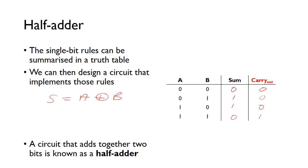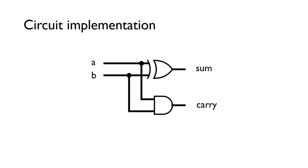For the carry, looking at the carry column, we can recognize that as an AND function — the carry is only one when both A and B are one. So carry-out equals A AND B. This circuit that adds two bits together we call a half adder: the sum is given by the XOR of A and B, and the carry by the AND function.